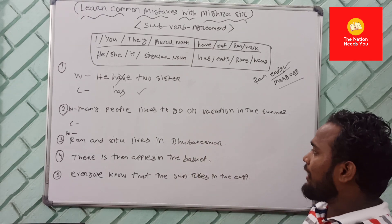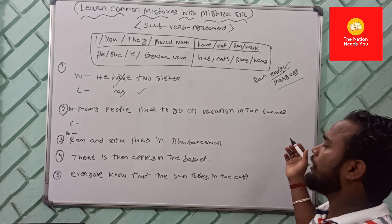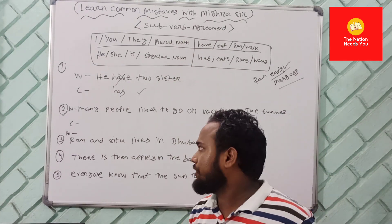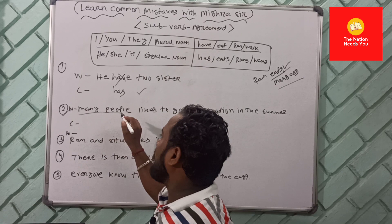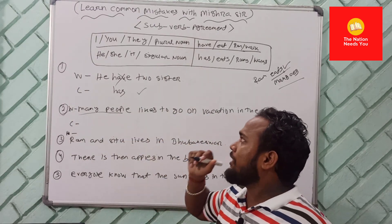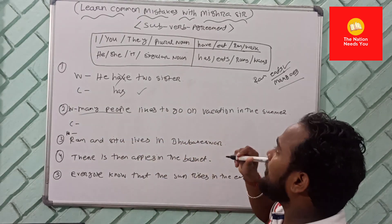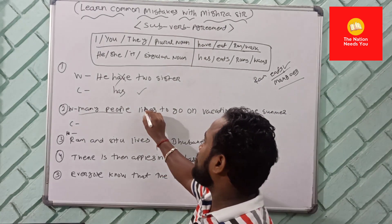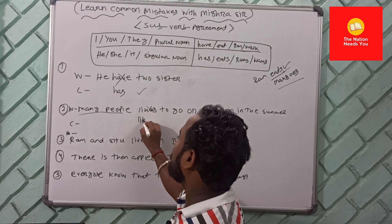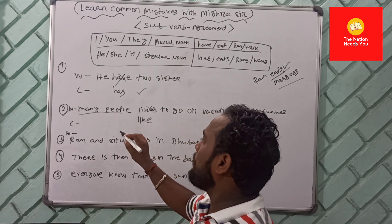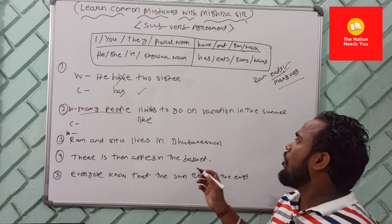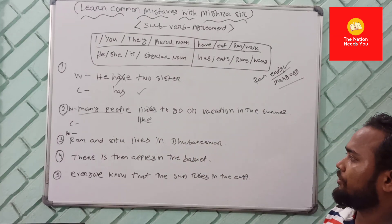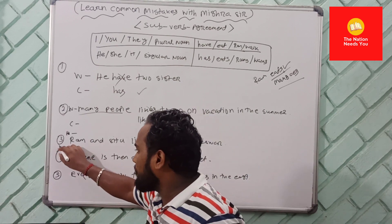Number two: 'Many people likes to go on vacation in the summer.' It sounds okay but it is grammatically incorrect. 'Many people' is a plural noun, so you are going to use 'like' not 'likes.' The correct sentence is: 'Many people like to go on vacation in the summer.'